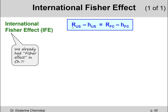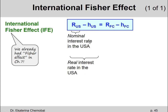The International Fisher Effect says the risk-free rate in the U.S.A. minus the inflation rate in the U.S.A. equals the risk-free rate in some foreign country minus the inflation rate in that foreign country. The risk-free rate in the U.S.A. is also something we call the nominal risk-free rate in the United States. And when we subtract the inflation rate, we get the so-called real interest rate in the U.S.A.